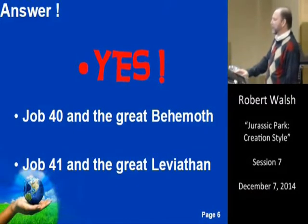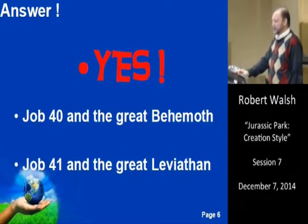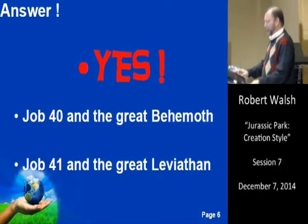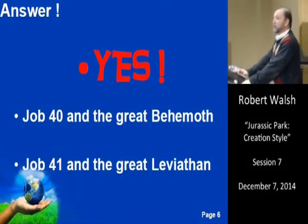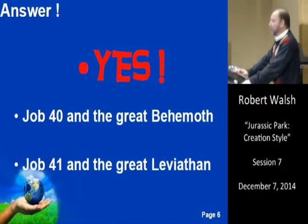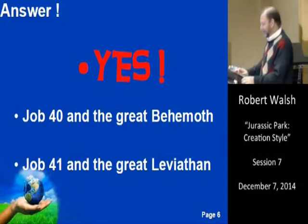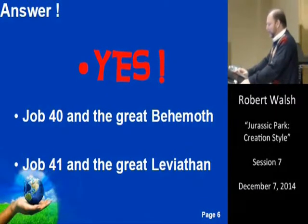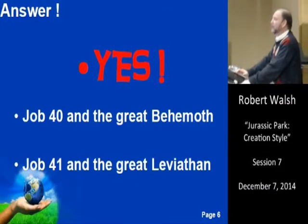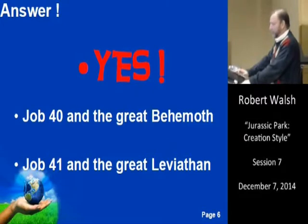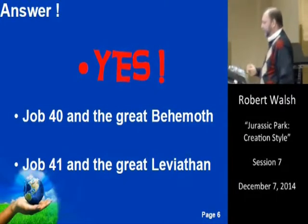Job 40 talks about a creature called the great Behemoth, and Job 41 discusses the great Leviathan. These two great chapters in the book of Job speak of incredible creatures that we only find in the fossil record. Job is probably the oldest book in the biblical text and could have been written by Moses. So let's take a look at the great Behemoth.